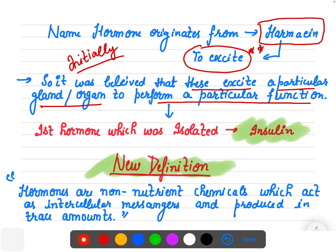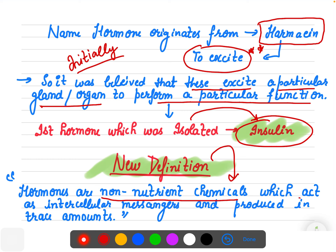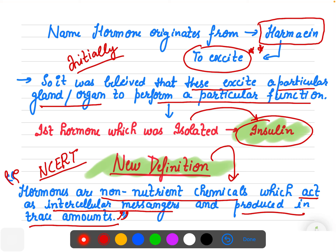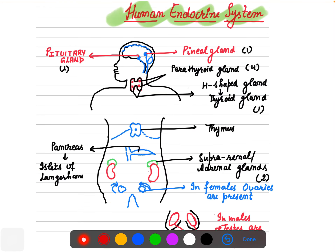The first hormone which was isolated by scientists was insulin, isolated from the pancreas of dogs. These days we use a new definition of hormone from NCERT: hormones are non-nutrient chemicals that act as intercellular messengers and are produced in trace amounts. This definition is directly from NCERT and is asked in exams.